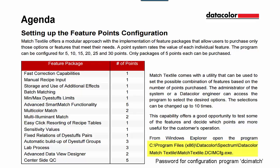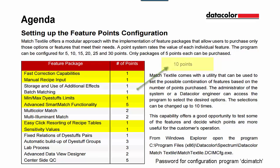The Confederation program for Match Textiles is in the main Match Textiles directory. The password for this program is DCIMatch. By default, points are chosen in order from the list on the left. So for a 5-point system, these points would be chosen, and then a 10-point system, 15, and so on. But it is possible to pick and choose the features up to the number of points you have purchased.